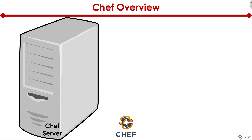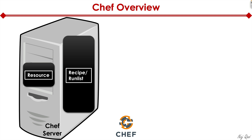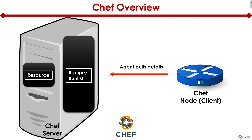Visually, you have a Chef server which could be installed as a VM. You have a resource file, and then a recipe or run list with resource as a subset. What a Chef node — essentially a client — would do is pull details from the Chef server. When it finds that it doesn't have the information it's expected to have, it goes ahead and pulls that configuration. So the onus is on the network client to pull its configuration, compared to Ansible where the change was pushed from the server to the client.